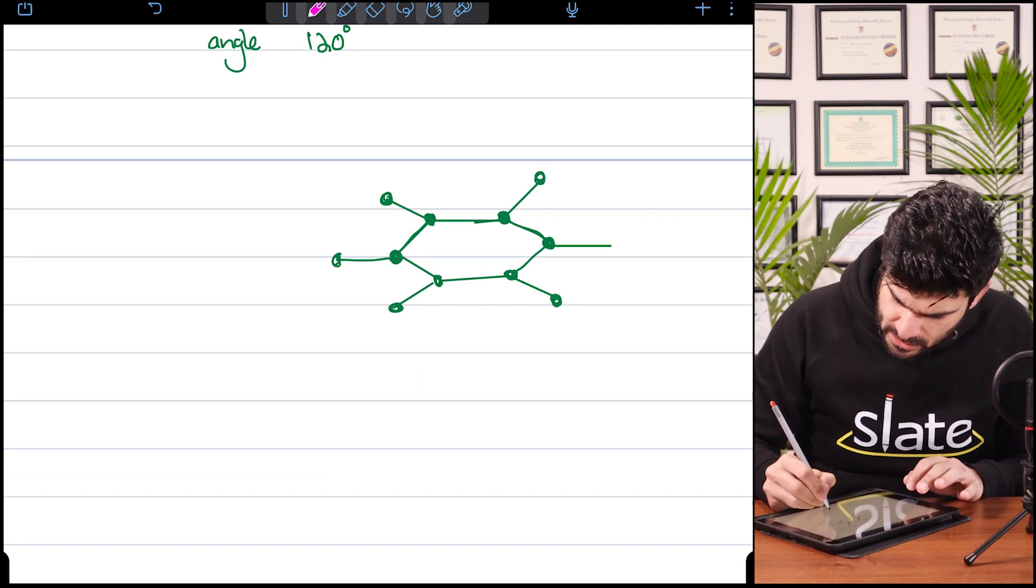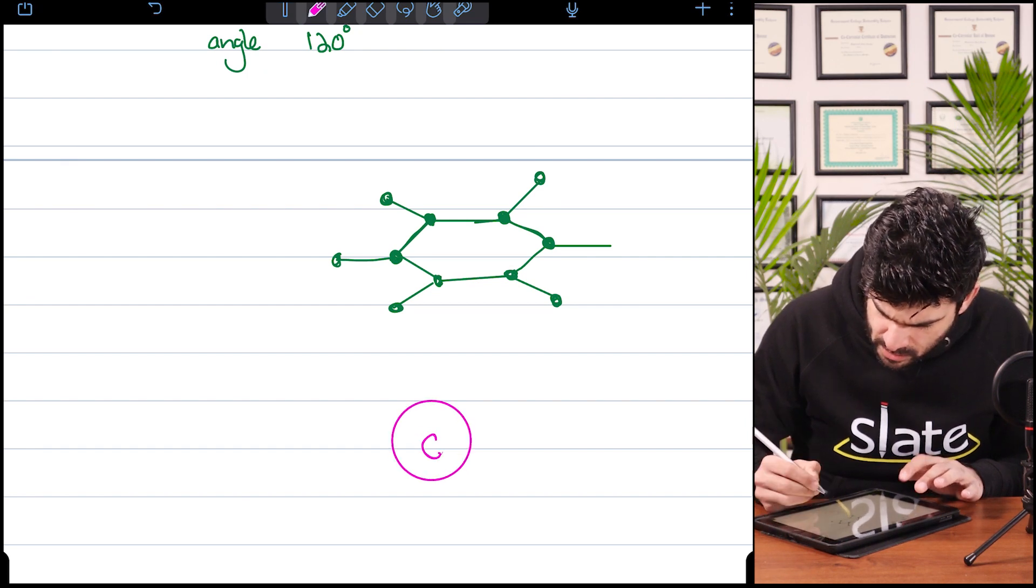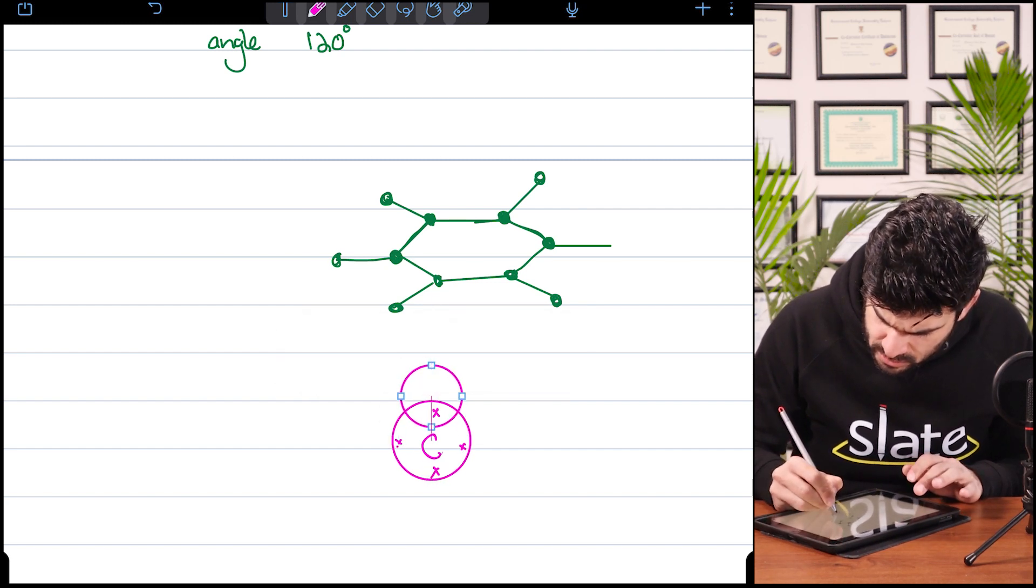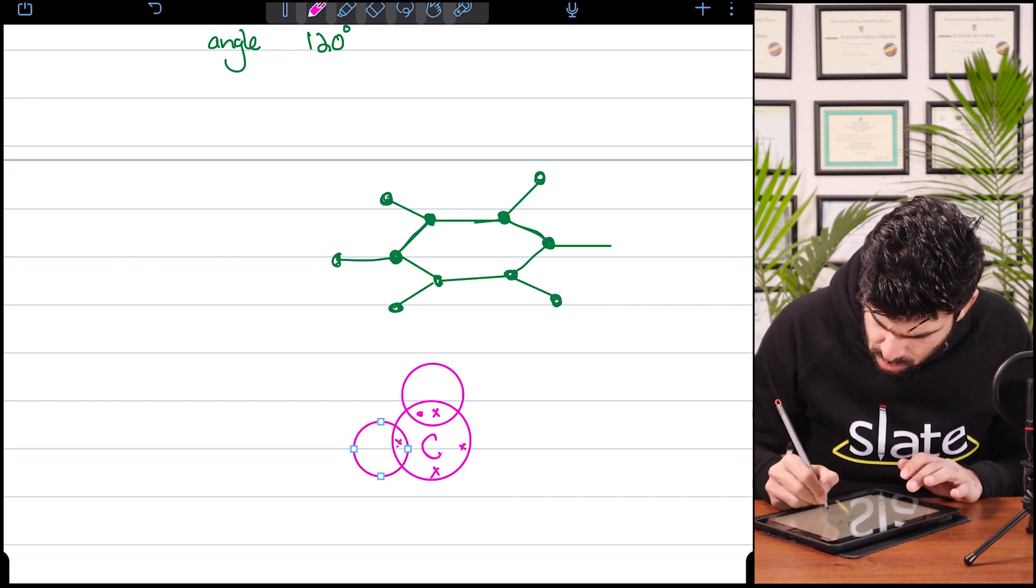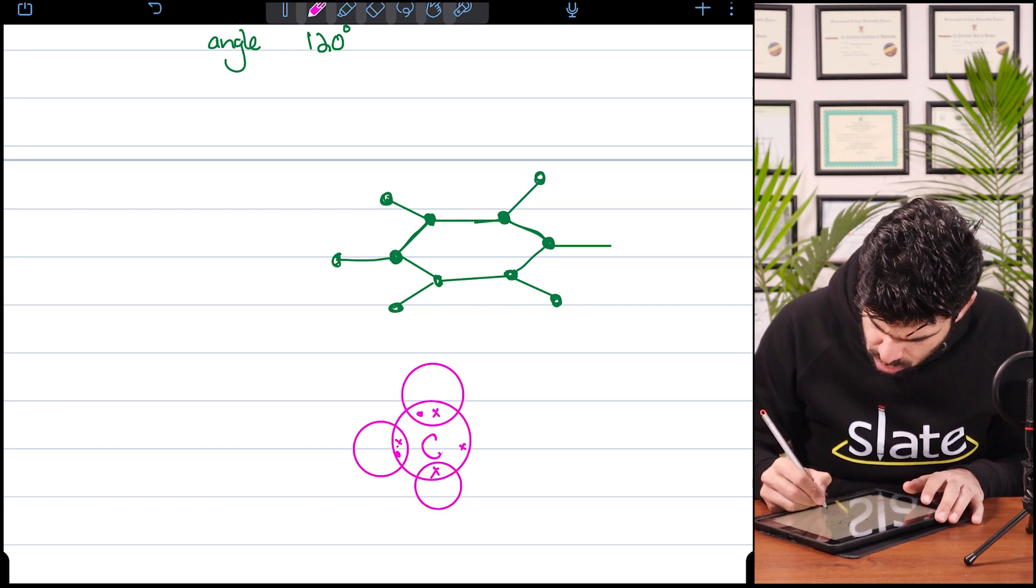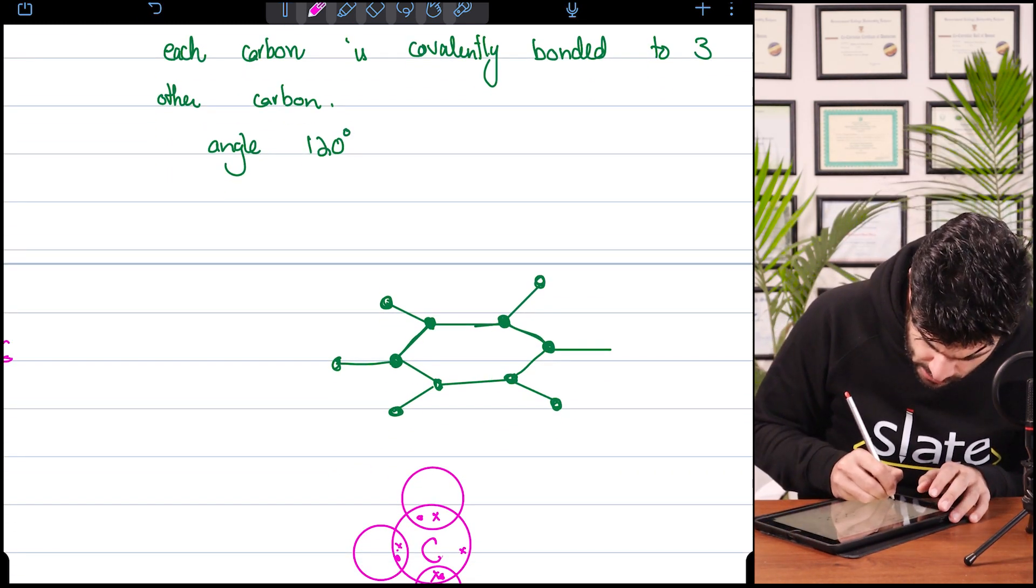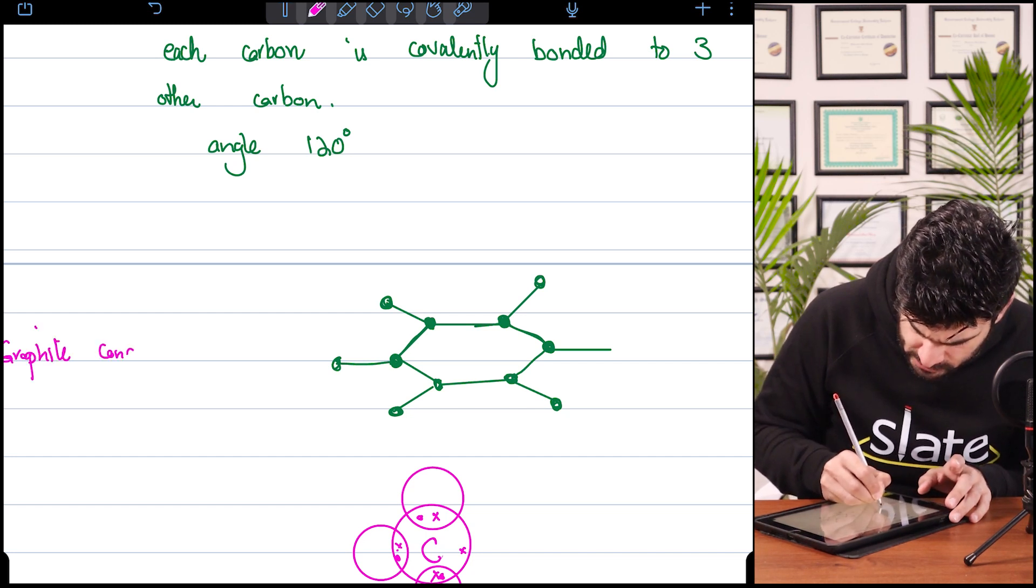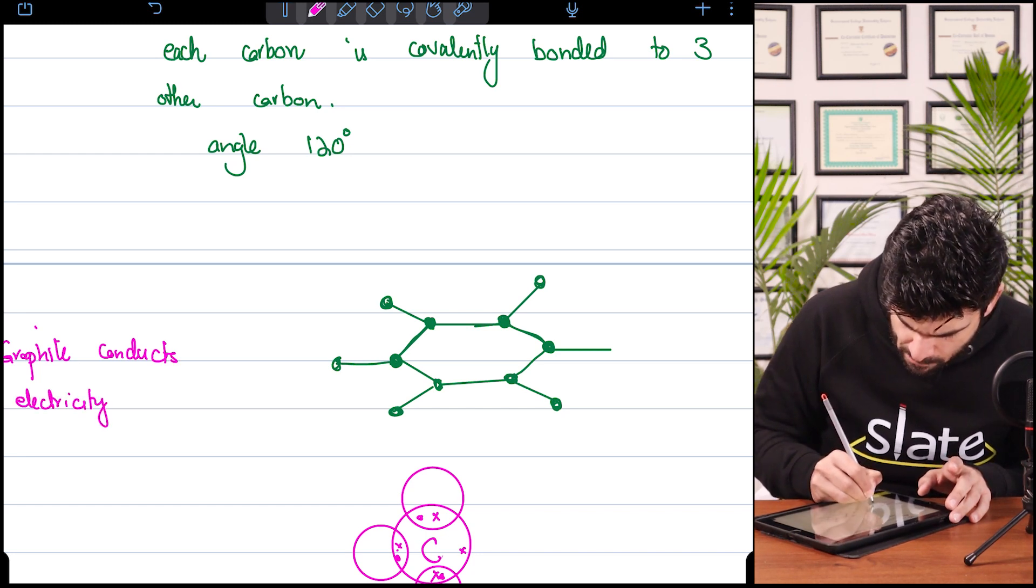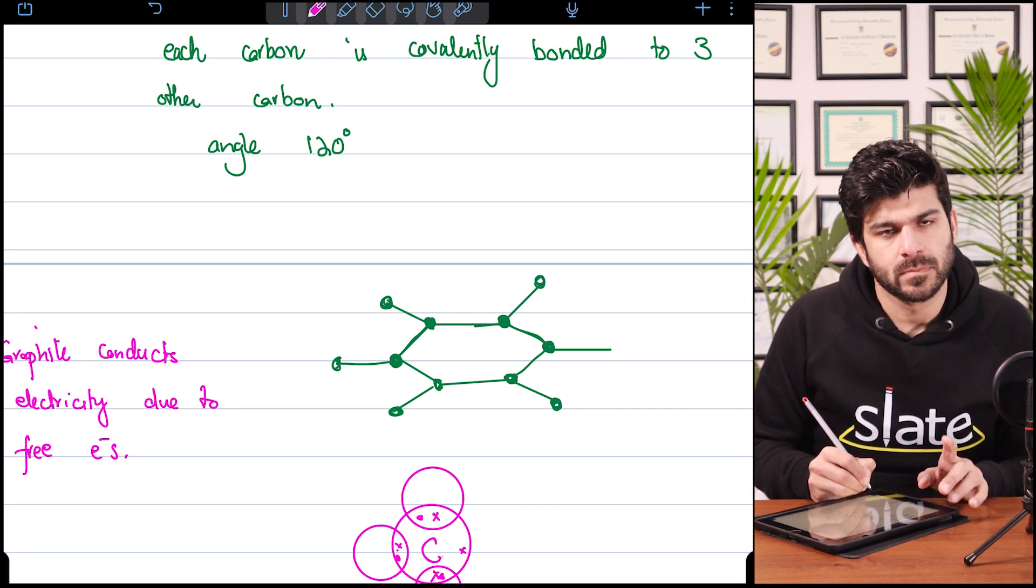Since carbon in graphite bonds with three - this carbon has four electrons, but it only bonds with three others - one electron is free here. What will that electron help us with? Graphite conducts electricity due to free electrons.